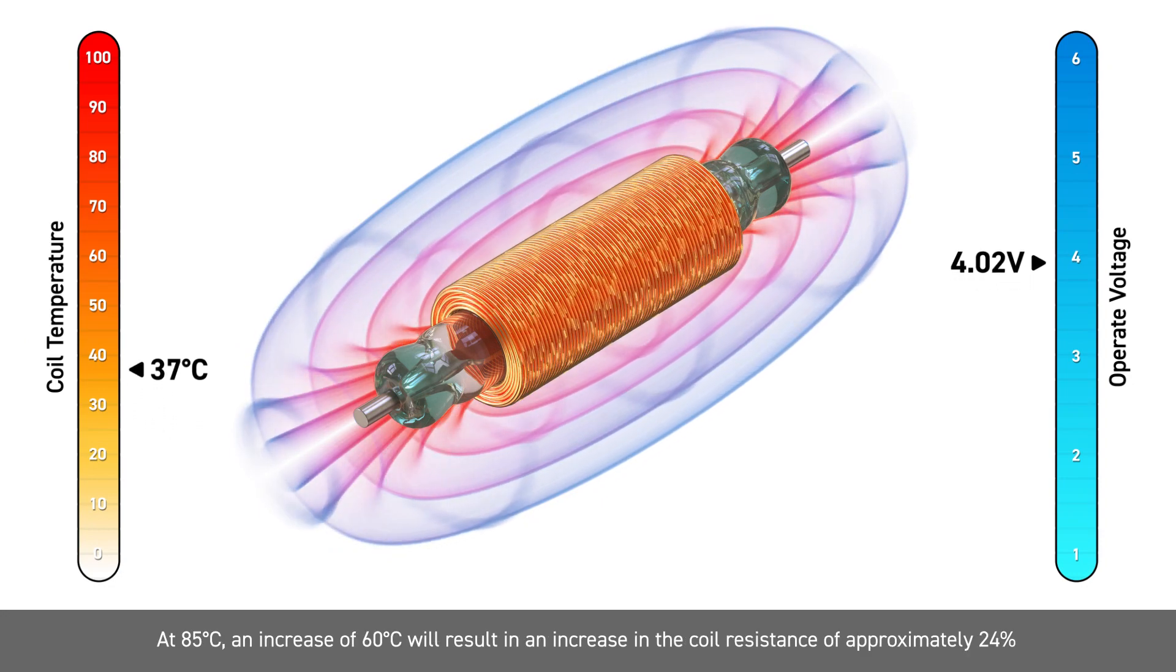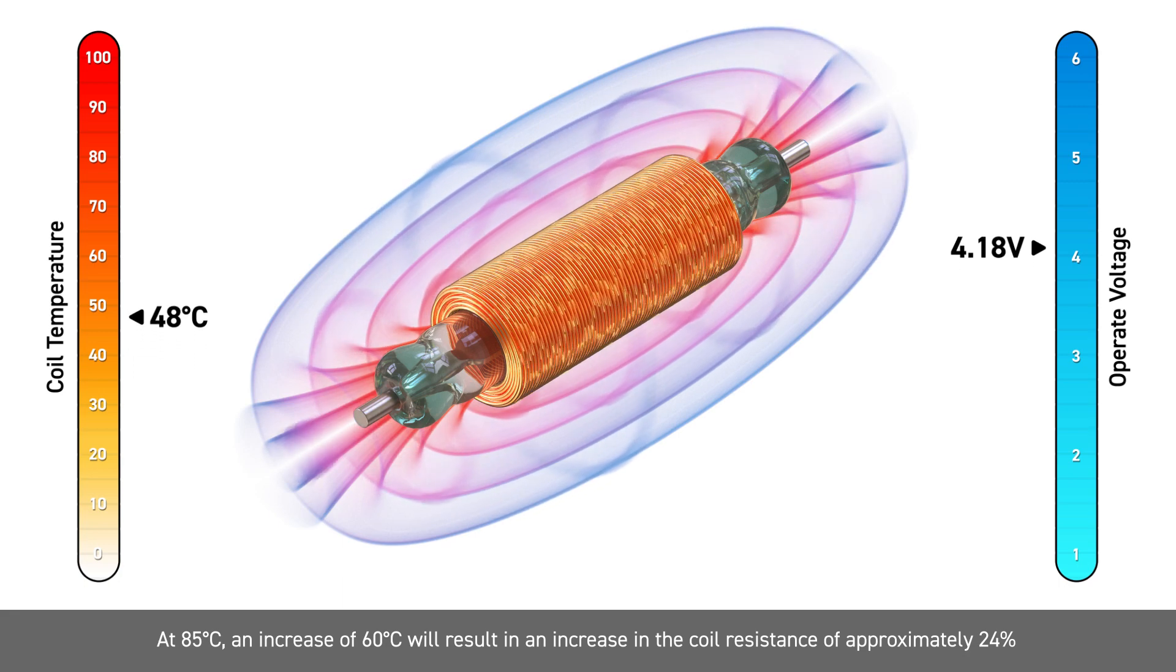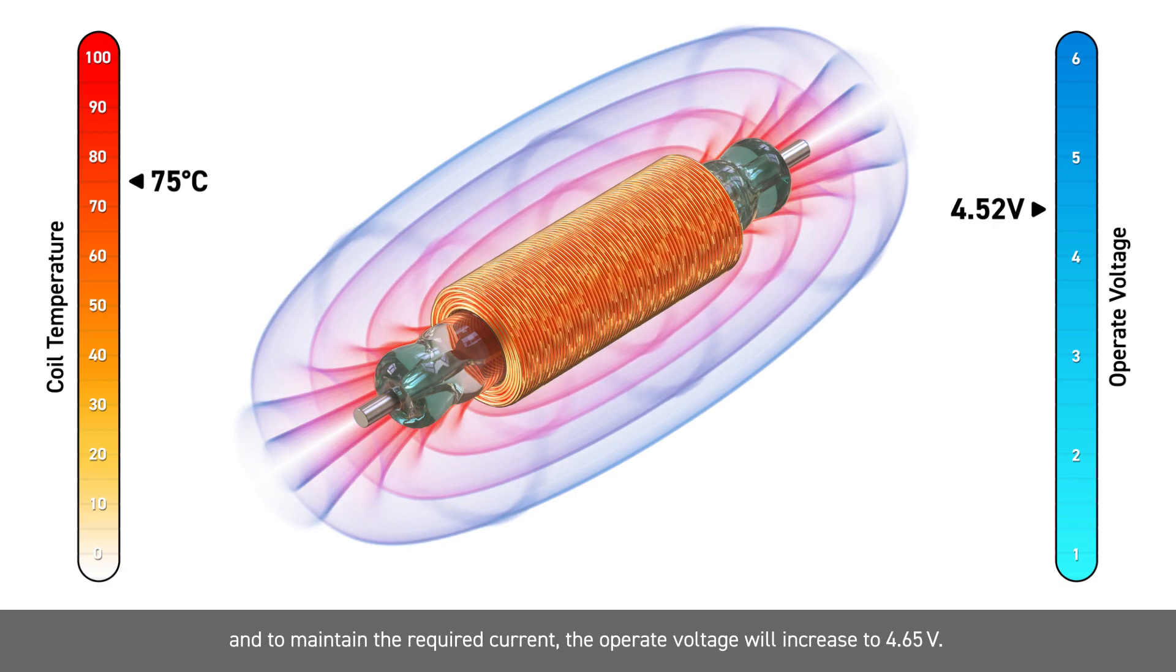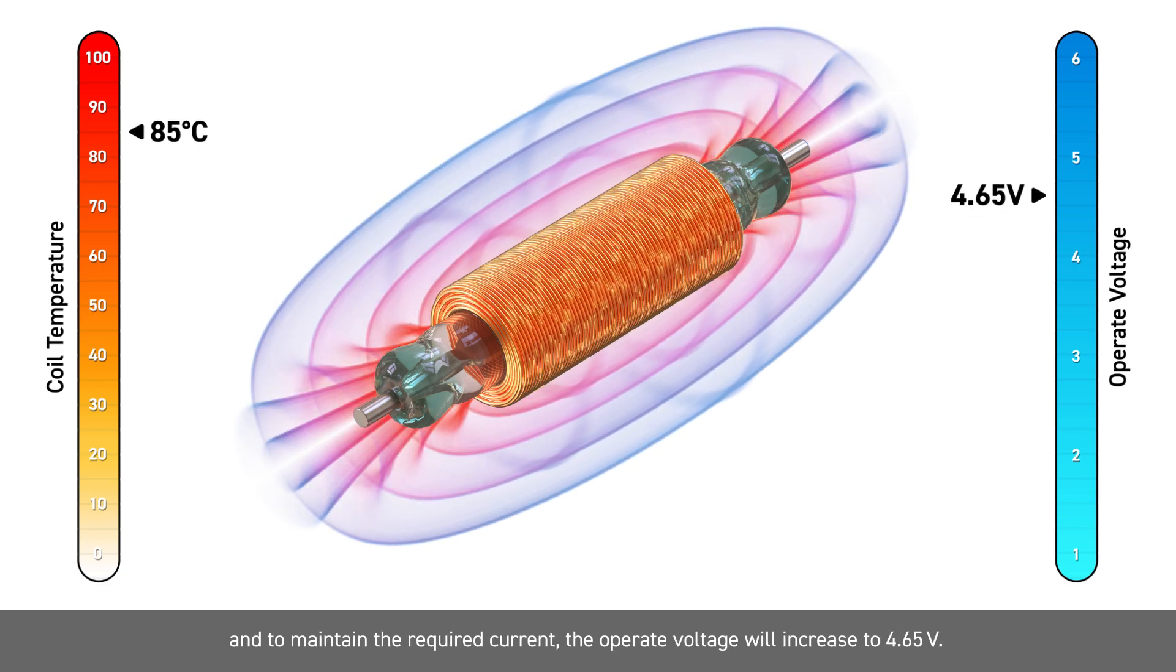At 85 degrees Celsius, an increase of 60 degrees will result in an increase in the coil resistance of approximately 24%, and to maintain the required current, the operate voltage will increase to 4.65 volts.